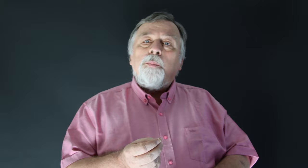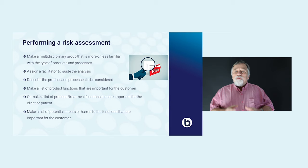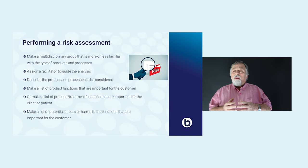The two most important methods are HACCP and FMEA. I'll explain later what that means. When you perform a risk assessment, the first step is to make a good team — a team with different people, different experiences, different disciplines, so that you can start a creative process in which you determine all the possible things that can go wrong.